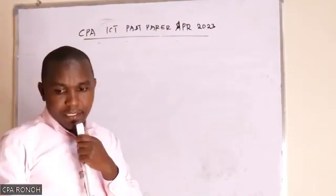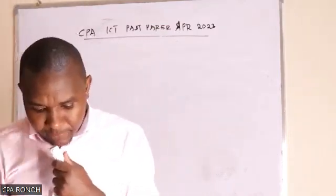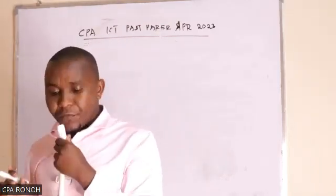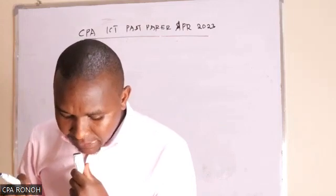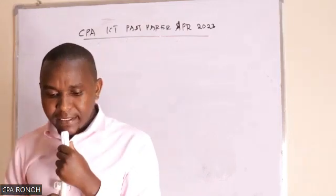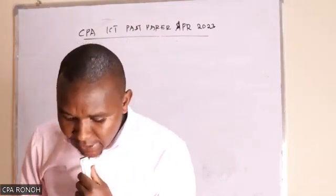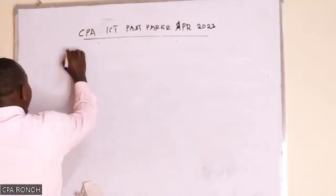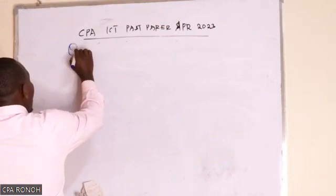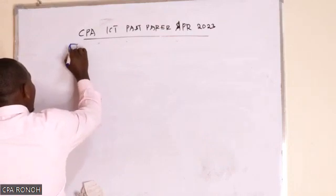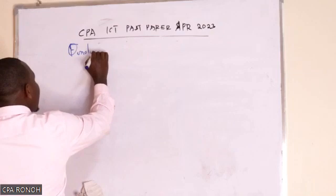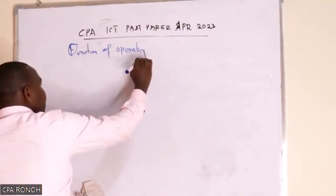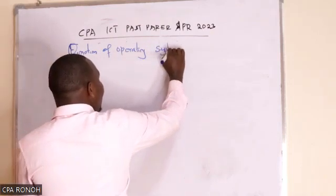Question C is asking: give five activities that the operating system executes in relation to process management. So here we are talking about the functions of the operating system.